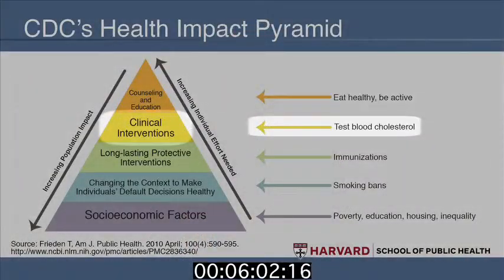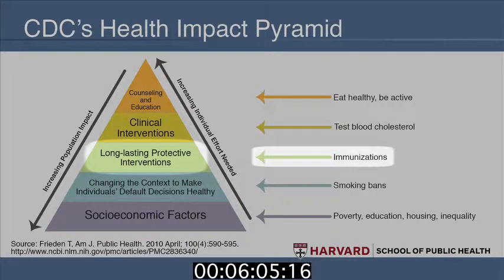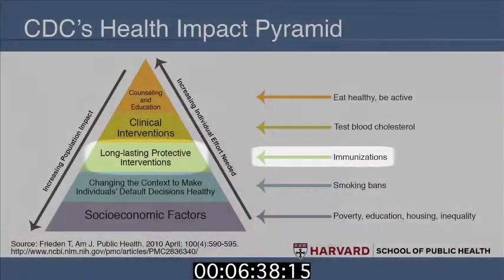We go even further to long-lasting preventive interventions like immunizations, where we don't just test people one at a time, but create programs that provide broader societal disease protection. We know that in areas of the country where people are refusing to get immunizations for their children, we're seeing — for the first time in about 50 years — measles outbreaks coming around the country. And that is part of what we try to prevent with these kinds of protective interventions.